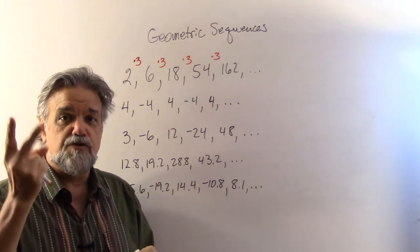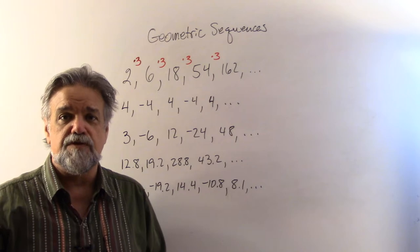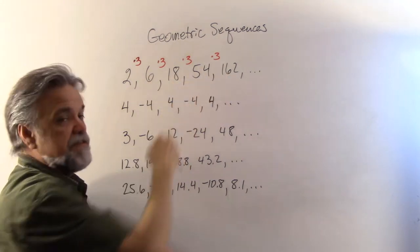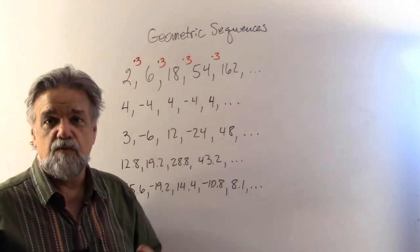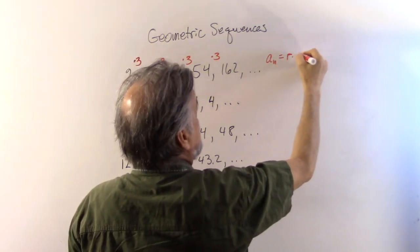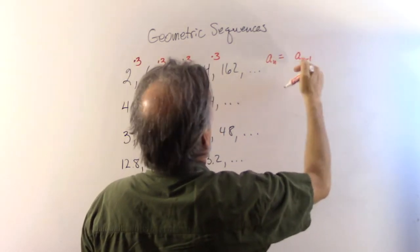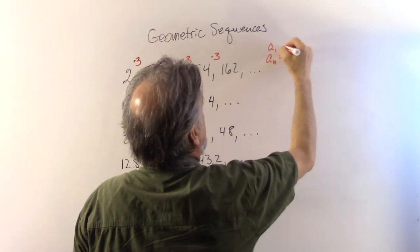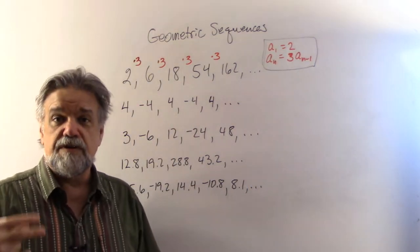So this sequence is defined by two numbers: your first term, and this multiplier we generally refer to as r because it's the ratio between terms. You can always find r by dividing consecutive terms — for example, 18 divided by 6, or 54 divided by 18. One way to describe this sequence is recursively: a sub n equals 3 times a sub n minus 1, with a sub 1 equals 2.